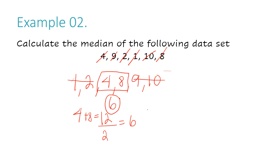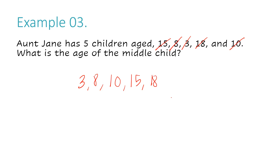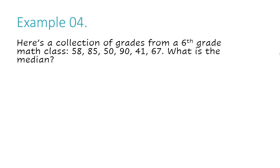Let's take a look at example number 3. Aunt Jane has five children aged 15, 8, 3, 18, and 10. What is the age of the middle child? Let's order these numbers from least to greatest: 3, 8, 10, 15, 18. Now I'm going to cross off two on my right and two on my left — I'm left with 10 in the middle. So the age of the middle child is 10.